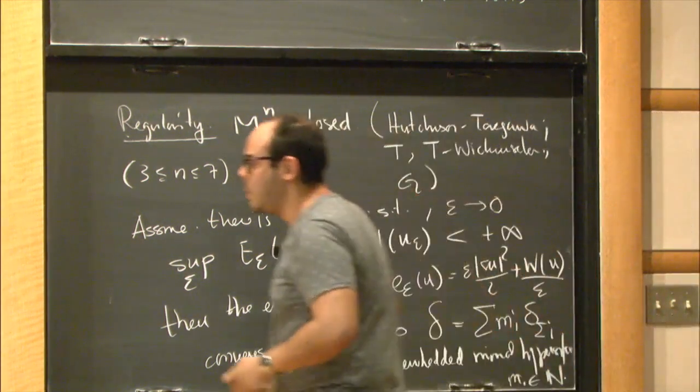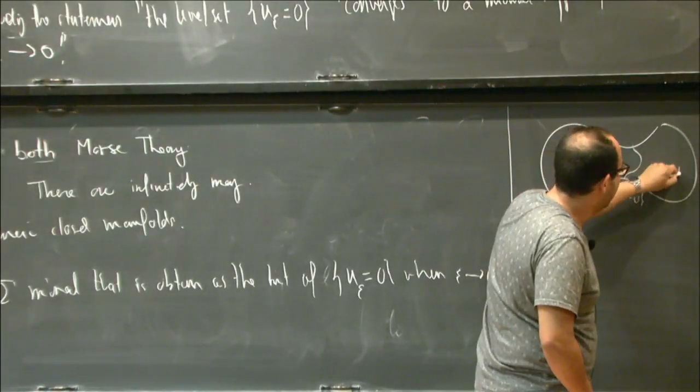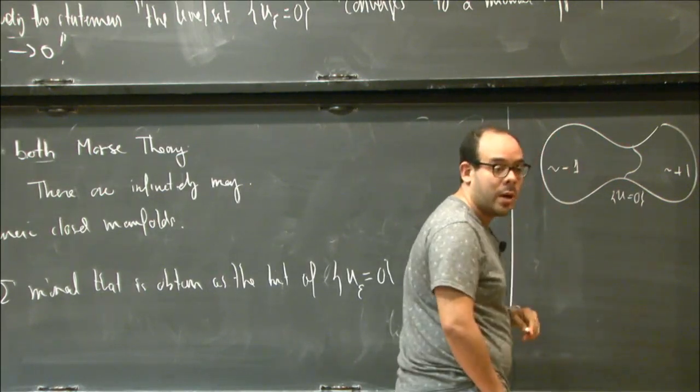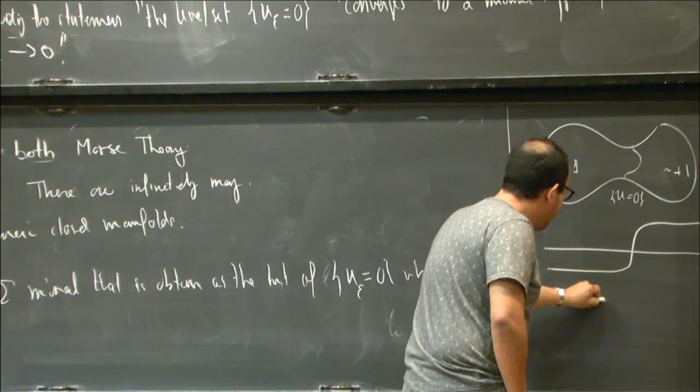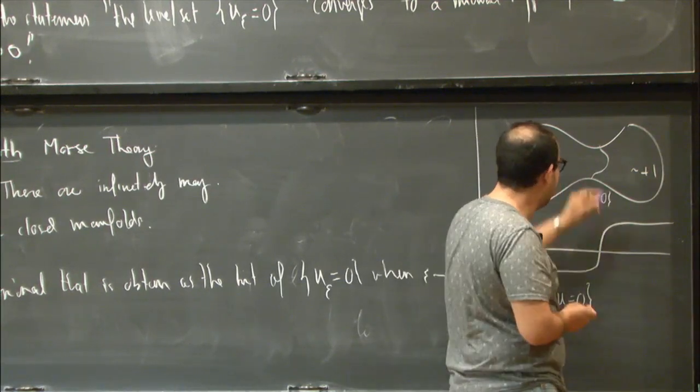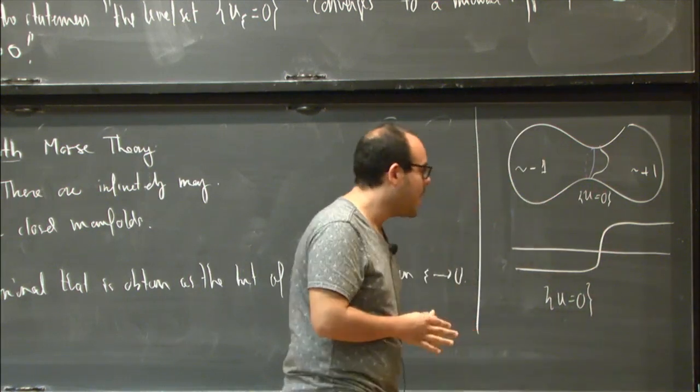So the theorem is, in fact, more precise. It tells you that the convergence of these objects... So let me draw a picture first, so that you can understand what I'm saying. This is saying the following. Let's say these are closed manifold. And we have a solution of the Allen-Kahn equation. This is the level set u equals 0. What's going to happen is that on this side the solution is going to be close to 1. On this side the solution is going to be close to minus 1. So the profile of the function is going to be like this.